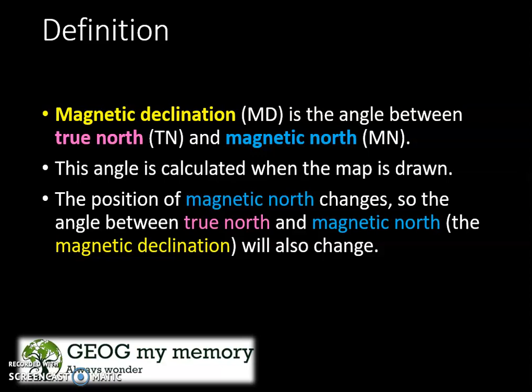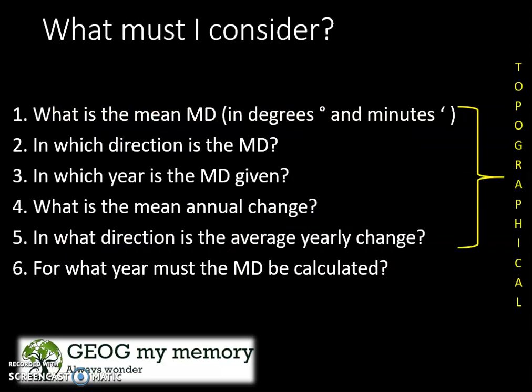The position of magnetic north changes, so the angle between true north and magnetic north — the magnetic declination — will also change. What should we consider? One: the mean magnetic declination in degrees and minutes. Two: the direction of the magnetic declination. Three: the year the magnetic declination is given. Four: the mean annual change. Five: the direction of the annual change. And six: the year for which the magnetic declination must be calculated. Questions one to five can be found on your topographical map.